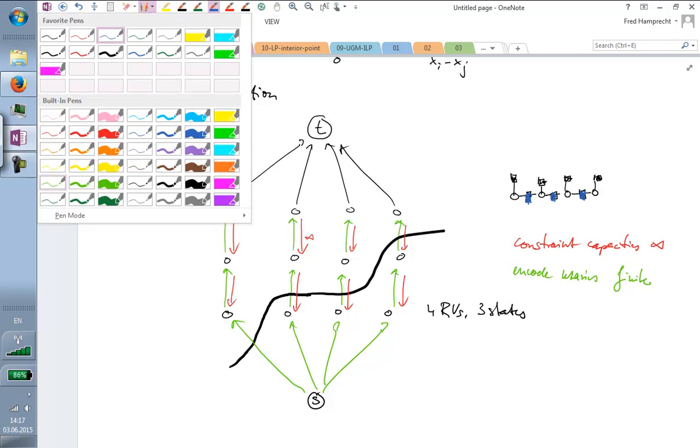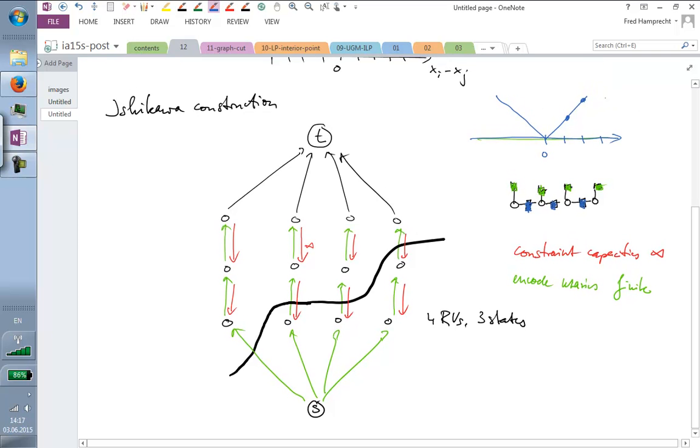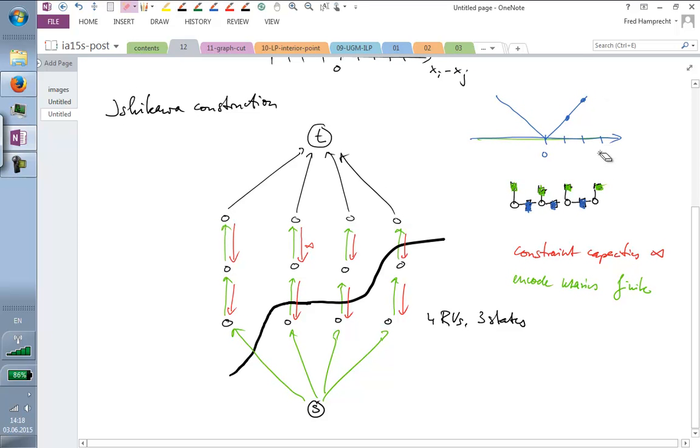Okay? So far so good. But we have not yet taken into account that we have these smoothness factors here. Okay, I'm usually a very monochrome person but I'm trying to be didactical here. So I'm going to paint the unaries in green. And now we still have these blue smoothness factors and I need to somehow encode them in the graph. So let's say, for example, that we want to have a potential which increases linearly with the label difference.